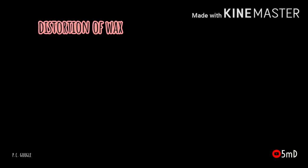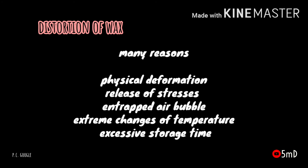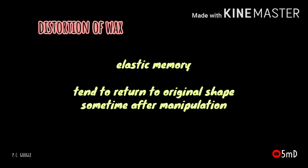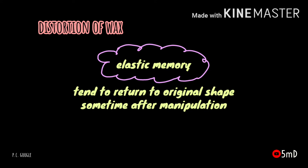One of the serious problems encountered with wax patterns is distortion. Distortion can result from physical deformation, release of stresses trapped inside during the previous cooling process, excessive storage time, or extreme changes of temperature during storage. Like other thermoplastic materials, waxes tend to return to their original shape after manipulation — this is known as the elastic memory of wax. Storage of a wax pattern for too long can lead to distortion due to stress relaxation effects.